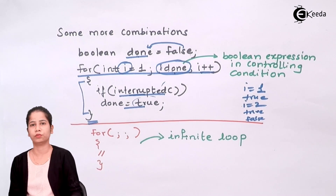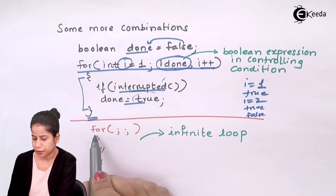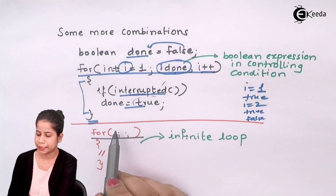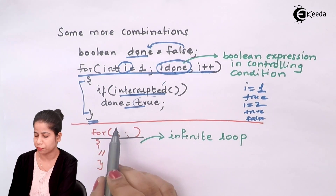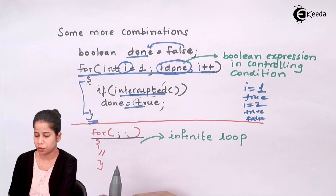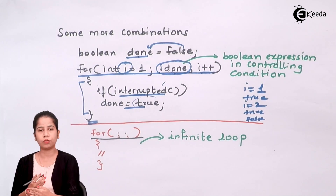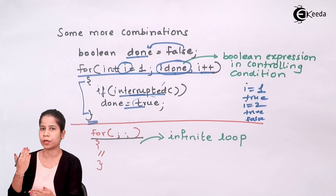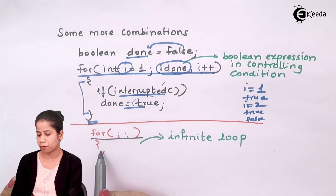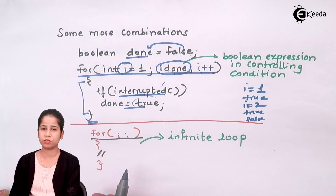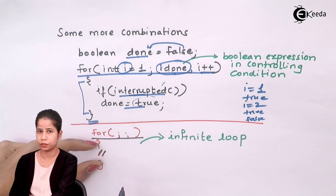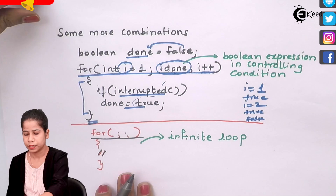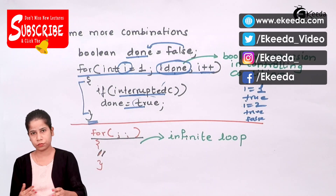Another combination gives you an infinite loop. If you write 'for(;;)' — with just two semicolons and no initialization, condition, or increment/decrement — the loop has no starting point, no ending point, and no counter update. The task inside will never end and will keep executing forever. So these are the various combinations you can use with for loops.